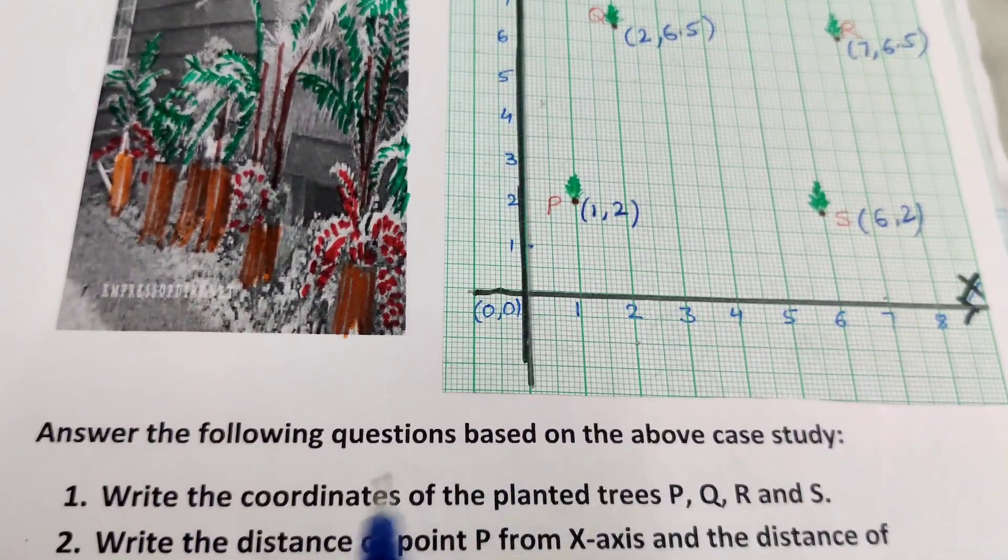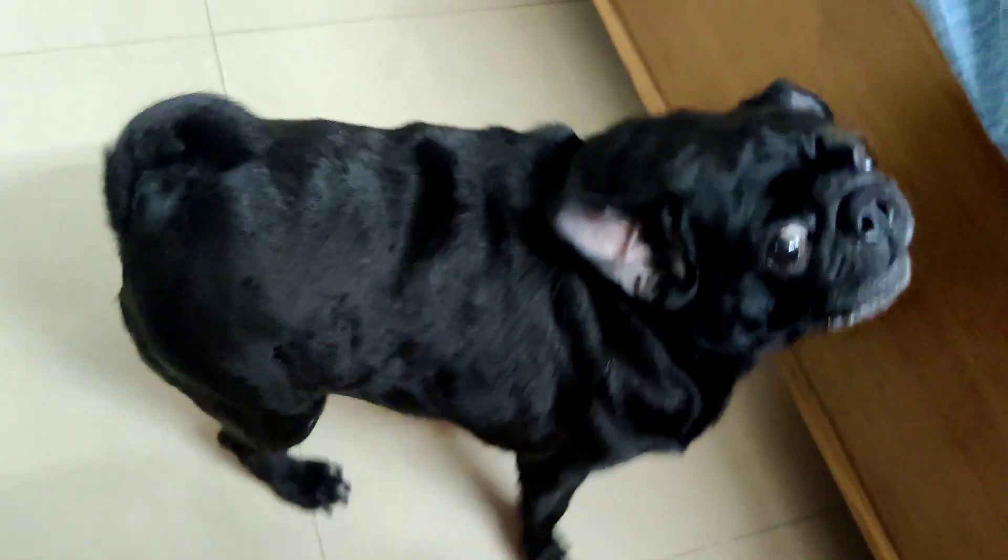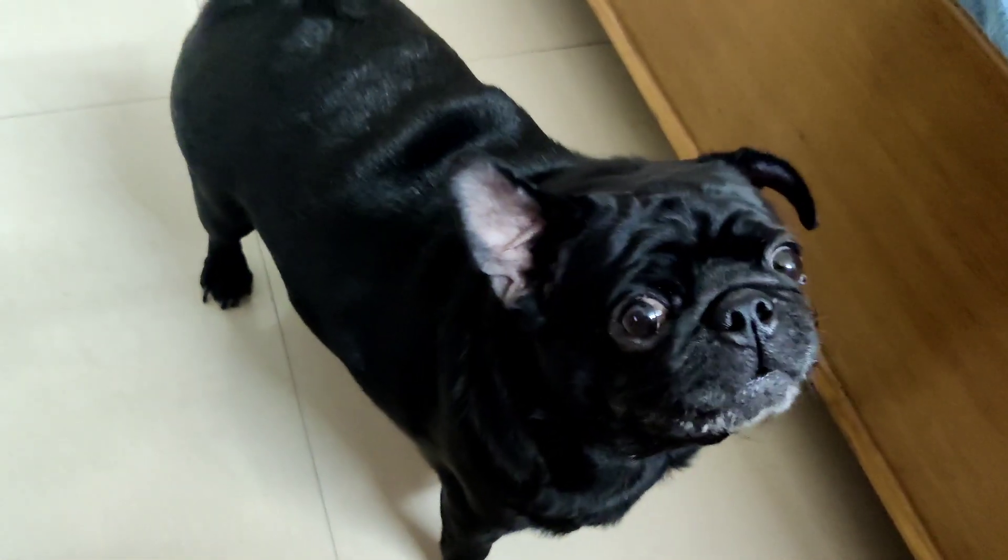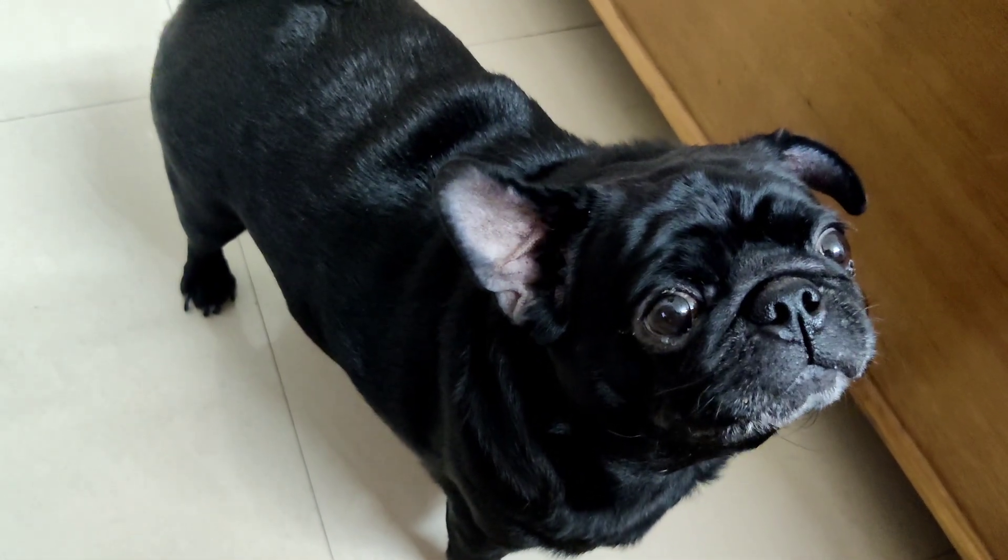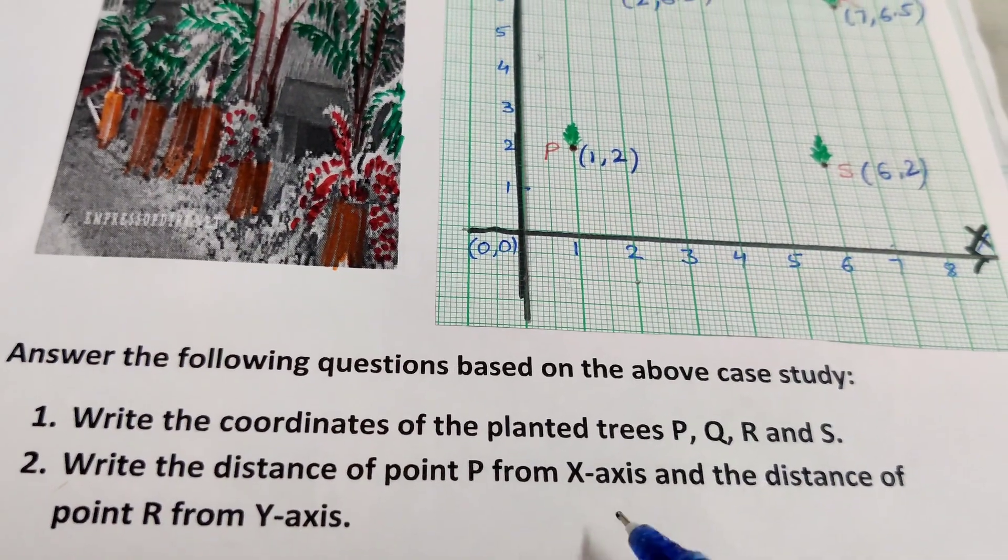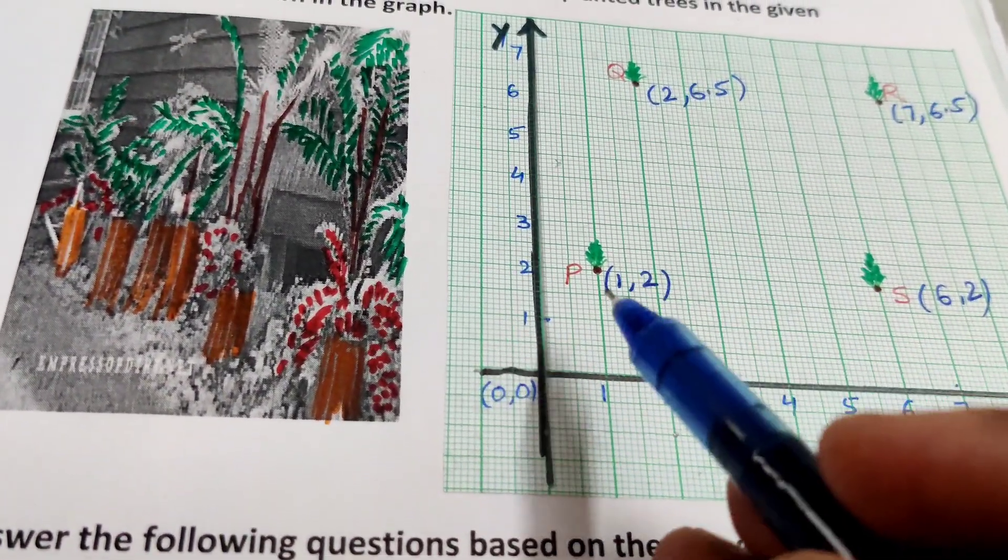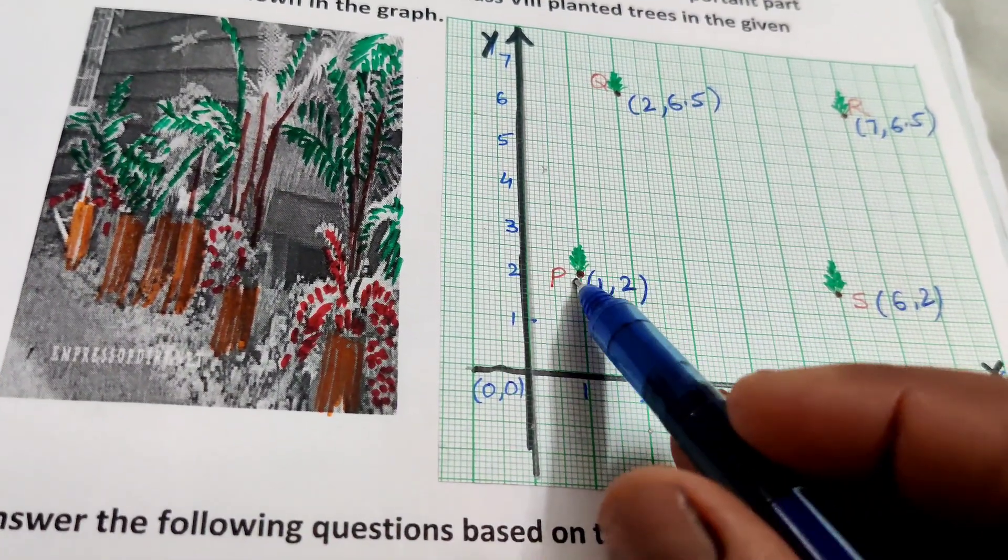Second question is this: Write the distance of point P from x-axis. The distance of point P from x-axis is the distance from x-axis means 1, 2. 2 units.